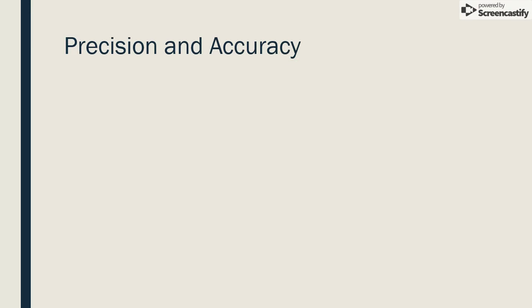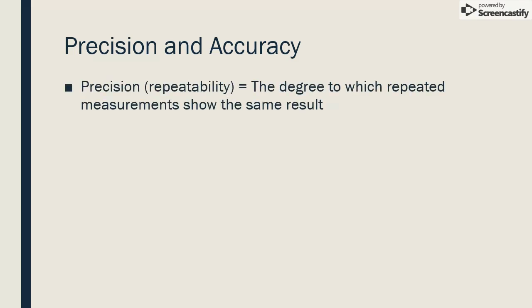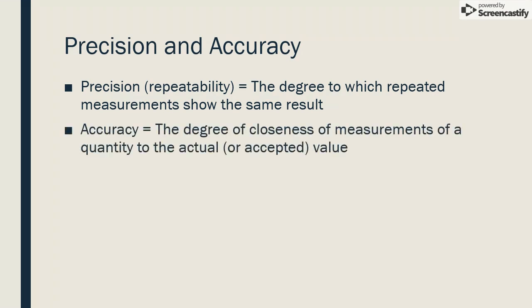Although precision and accuracy are often confused, there is a difference between the meanings of these two terms in the fields of science and engineering. Precision indicates how close together repeated measurements of the same quantity are to each other. So a precise bathroom scale would give the same weight each time you stepped on the scale within a short time, even if it did not report your true weight. Accuracy indicates how close measurements are to the actual quantity being measured. For example, if you were to put a five pound weight on a scale, we would consider the scale accurate if it reported a weight of five pounds.